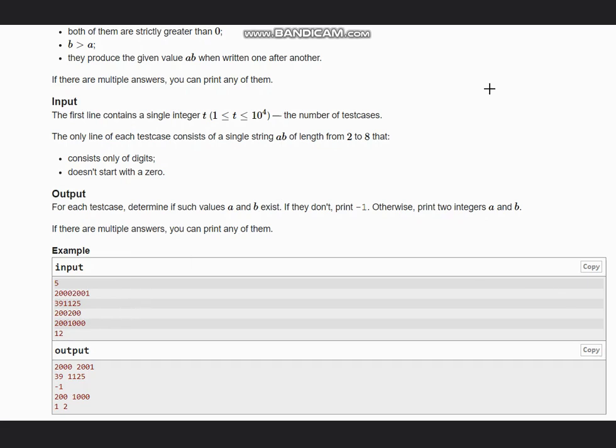In case of the second one which is 391125, just take the first digit. Since we do not have corresponding zeros we will split here itself, so it will be 3 and 91125.